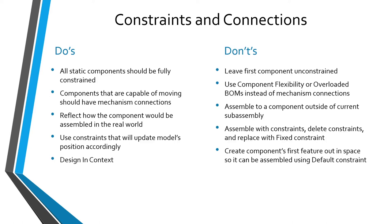If you have everything assembled with fixed constraints and then you have a change — like the fighter plane needs to get longer or shorter — you've got to edit the definition of all those components, reassemble them, and then probably do that same thing of deleting constraints and adding a fixed constraint back in. Don't do that. Use real assembly constraints.